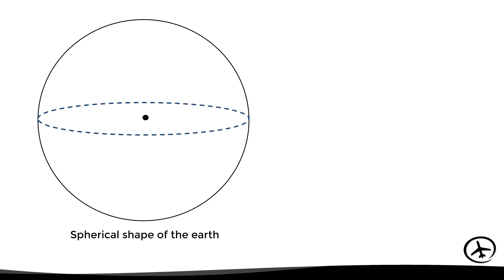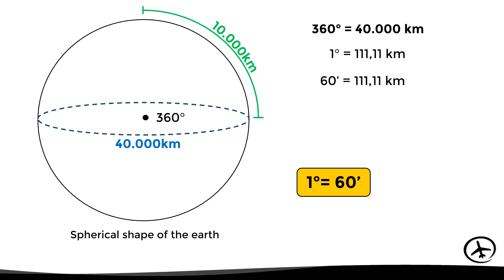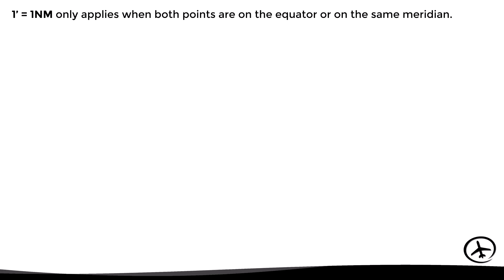To answer this, we must first analyze the dimensions of the Earth. In practical terms, we can assume that the Earth is a perfect sphere with a circumference of 40,000 kilometers. With this in mind, if 360 degrees equals 40,000 kilometers, then each degree equals 111.11 kilometers. And as we know, each degree can be divided into 60 minutes, so then each minute equals 1.852 kilometers. And 1.852 kilometers is exactly 1 nautical mile — so we can say that each minute of arc equals 1 nautical mile. However, this rule only applies when both points are on the equator or on the same meridian, which are great circles.